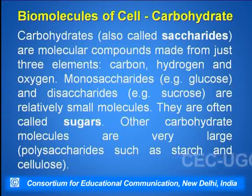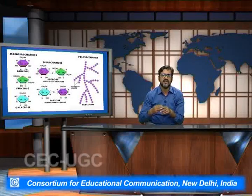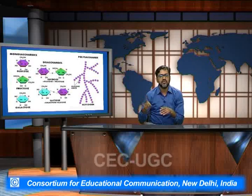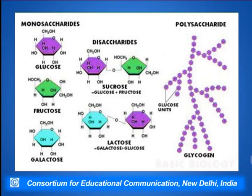They are often referred to as sugar molecules. These pictures represent the monosaccharides — glucose, fructose, and galactose can be seen. Subsequently there is a presence of disaccharides in which two sugar molecules are combined to one another with the help of glycosidic bonds. Sucrose is a disaccharide of glucose and fructose, and lactose is a disaccharide of galactose and glucose.